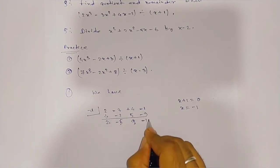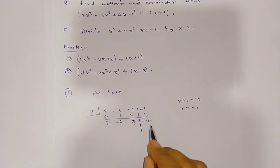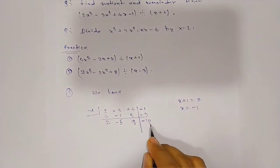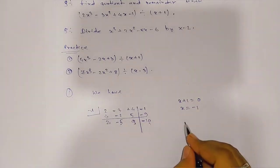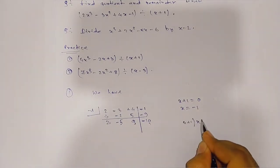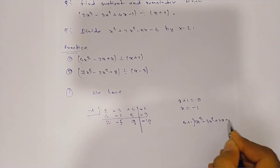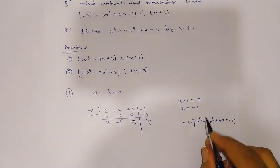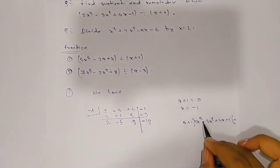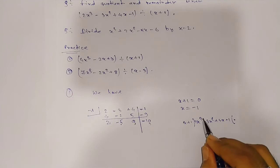Leave the last one as your remainder. These are the coefficients of your quotient. When dividing 2x³ minus 3x² plus 4x minus 1, your quotient starts with degree one less than the given polynomial. Since the dividend has degree 3, the quotient starts with x².